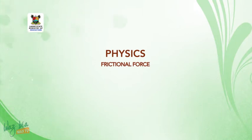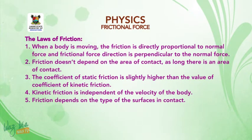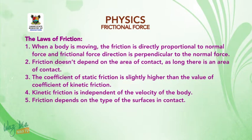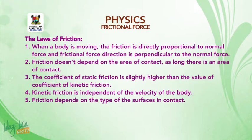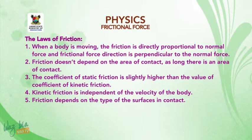We are looking at frictional force. Let's look at the laws of friction. 1. When a body is moving, friction is directly proportional to the normal force, and the frictional force direction is perpendicular to the normal force. 2. Friction doesn't depend on the area of contact, as long as there is an area of contact. 3. The coefficient of static friction is slightly higher than the coefficient of kinetic friction.